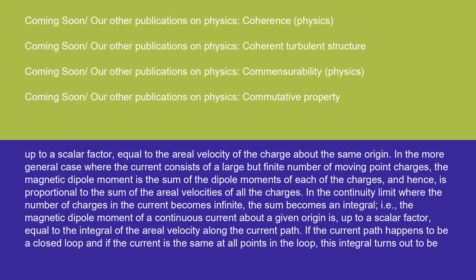In the more general case, where the current consists of a large but finite number of moving point charges, the magnetic dipole moment is the sum of the dipole moments of each of the charges, and hence is proportional to the sum of the aerial velocities of all the charges. In the continuity limit where the number of charges in the current becomes infinite, the sum becomes an integral, i.e., the magnetic dipole moment of a continuous current about a given origin is up to a scalar factor, equal to the integral of the aerial velocity along the current path.